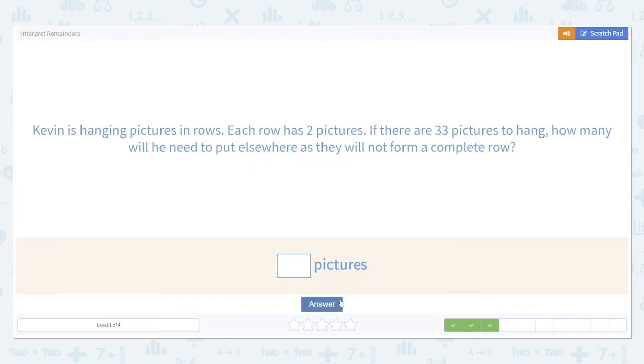Kevin is hanging pictures in rows. Each row has two pictures. There are 33 pictures to hang. How many will he need to put elsewhere as they do not form a complete row?